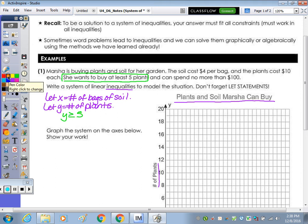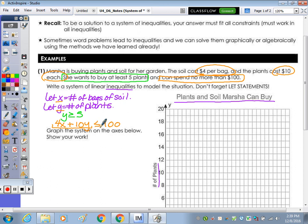The other statement, she can spend no more than $100. While the spending comes from here, $4 per bag and the plants are $10 each. So $4 per bag of soil, which is x, and then $10 per plant, which is y. How does that compare to $100? She wants to spend no more. So this over here is the amount that she's spending. Less than? She doesn't want to spend any more than $100. Can she spend exactly $100? Yeah. So less than or equal to.